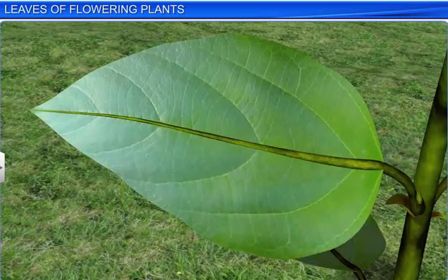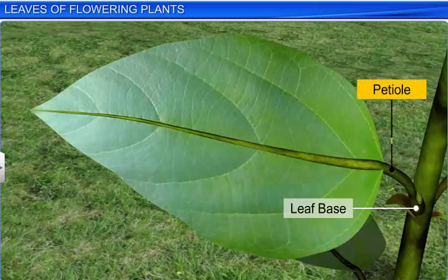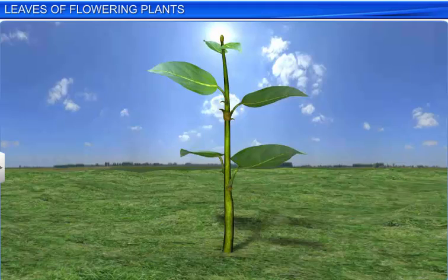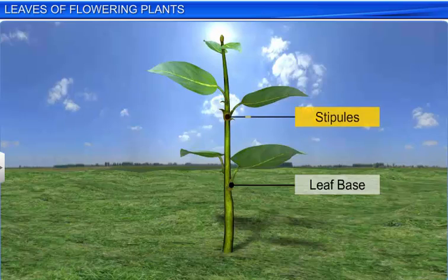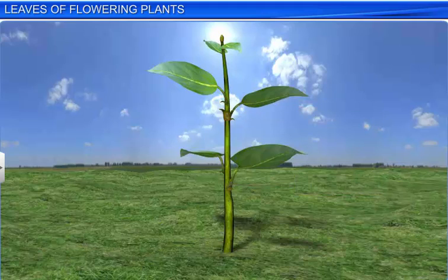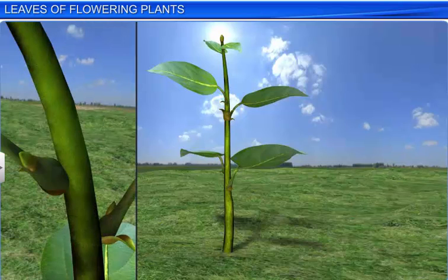A typical leaf has three main parts: leaf base, petiole, and lamina. The leaf is attached to the stem by the leaf base, and may bear two lateral, small leaf-like structures called stipules. In some leguminous plants, the base of the leaf may get swollen, which is known as pulvinus.